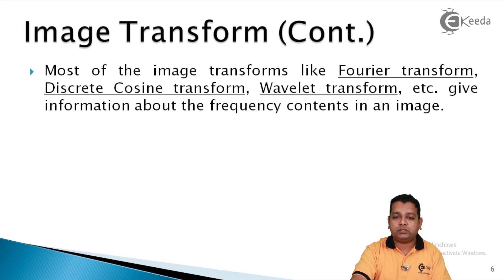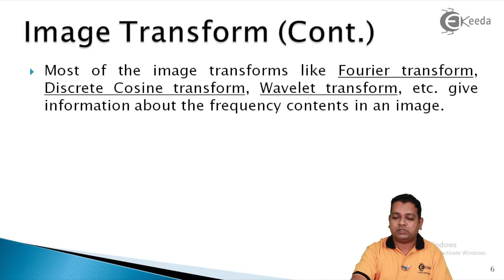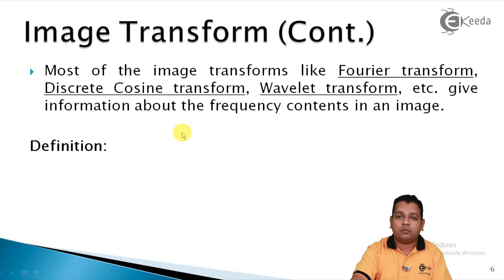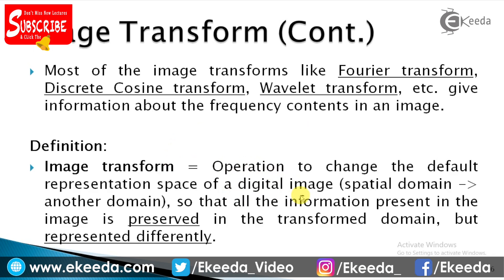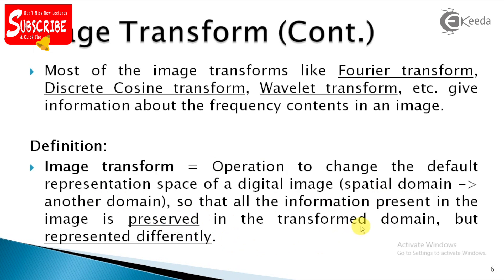Most image transforms — examples include the Fourier transform, discrete cosine transform, wavelet transform, and others — give information about the frequency contents of the image. We can have a simple definition of image transform: it is an operation to change the default representation space of the digital image, like the spatial domain f(x, y), to another domain, so that all the information present in the image is preserved in the transform domain but represented in a different manner.